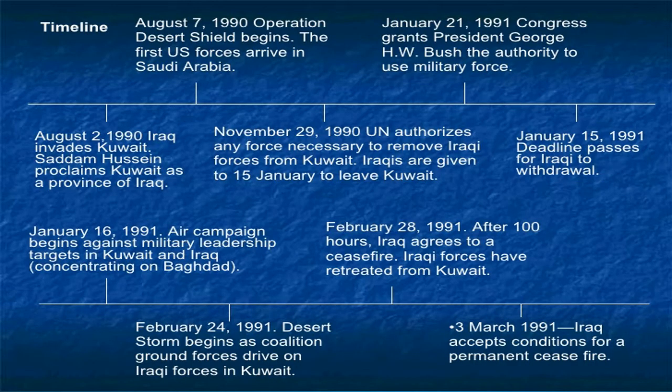Looking at the timeline, you can see things moved relatively quickly. The official invasion happened in August, then actual fighting began in January. On January 16th on the timeline, that's the air campaign. Then, a little over a month later, the ground troops came in. And — spoiler — only four days after the land campaign began, Iraq agreed to a ceasefire. We'll look at why this happened so quickly and why it benefited the United States so much.